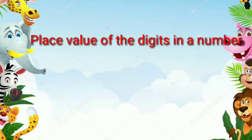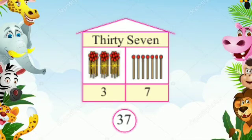Place value of the digit in a number. 3 tens, 7 units — 37.